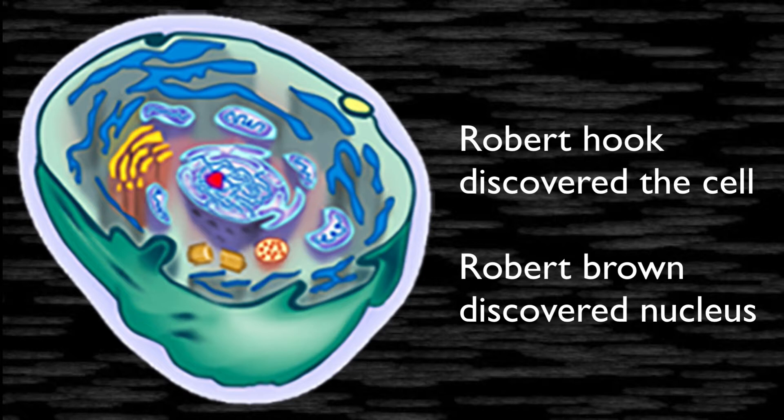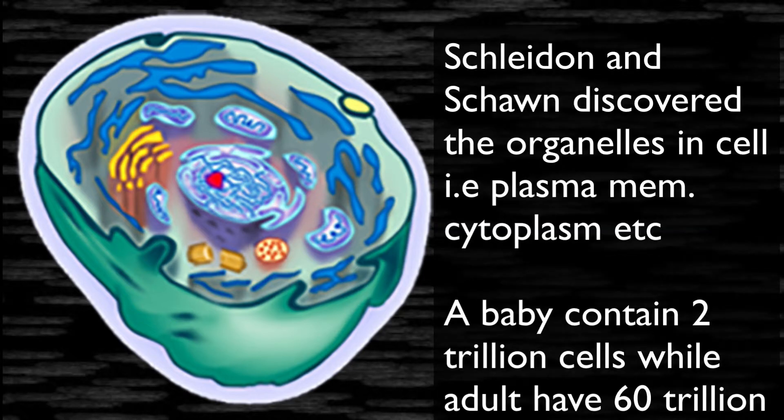So who actually discovered the cell? Robert Hooke discovered the cell, and Robert Brown discovered the nucleus present inside the cell. Schleiden and Schwann further discovered the membrane-bounded organelles.